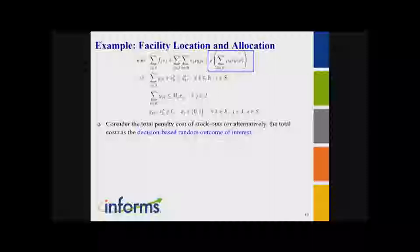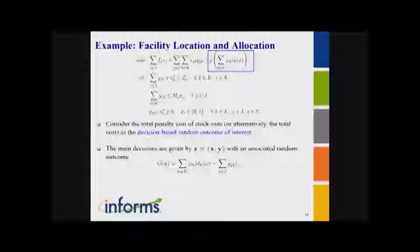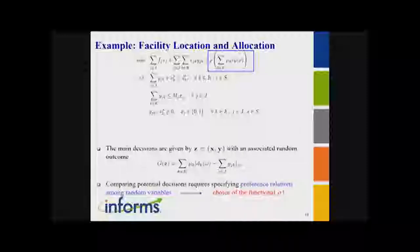Here we have these variables to capture the realization of demand shortage, which I penalize in the objective function — this is a random variable. Instead of the expectation, I can also use another type of mapping to assign a scalar to the random variable and return to the deterministic formulation. The idea: I consider the total penalty cost of stockout as my decision-dependent random outcome of interest. The whole idea of stochastic optimization is that we have decisions with random performance measures associated with them, and we need to figure out how to pick the decision.